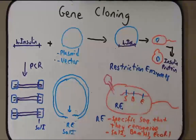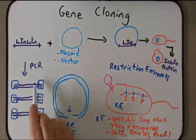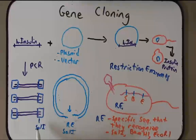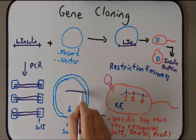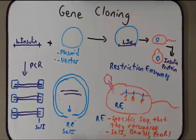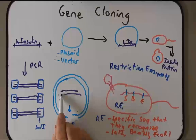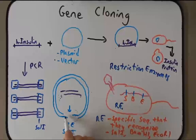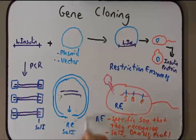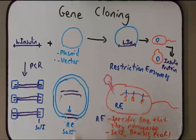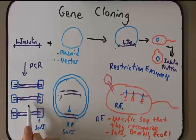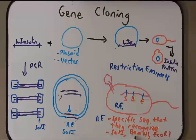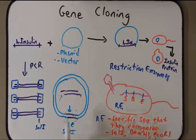When we cut the human insulin PCR product with Sal1, we end up with overhangs specific for Sal1 on both ends. These now match up perfectly with the overhangs from the vector that was digested, because they were both cut with Sal1. If this had been cut with BamH1, EcoR1, or one of the other hundreds of restriction enzymes, this would not work. It only works if you use the same restriction enzyme.